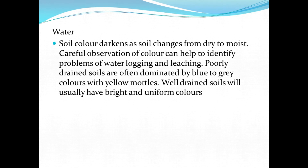Now let's look at how water determines the color of the soil. Soil color darkens as soil changes from dry to moist. Careful observation of color can help identify problems of waterlogging and leaching. Poorly drained soils are often dominated by blue to gray colors with yellow mottles, while well-drained soils will usually have bright and uniform colors.